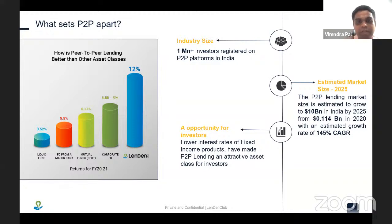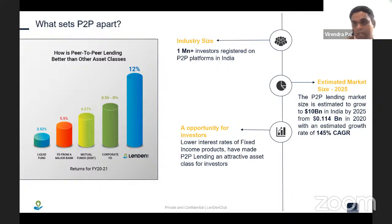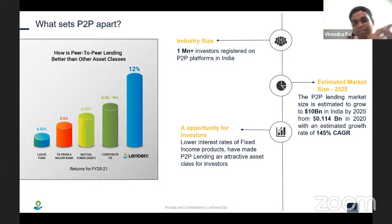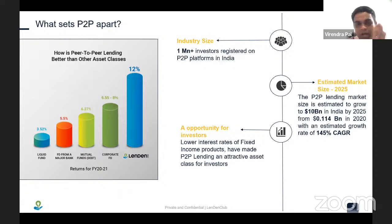P2P lending is growing in popularity. On our portal alone, more than a million people have registered as investors and are getting returns through our underwriting algorithms and models developed across the years. The market was around 0.1 billion in 2020 but is going to grow to 10 billion — a CAGR of 145%. This is a completely digital lending segment where everything happens digitally through mobile apps and websites. All documents are onboarded digitally, all risk assessment happens on the fly, and this segment is utilizing AI and related technologies at big scale.